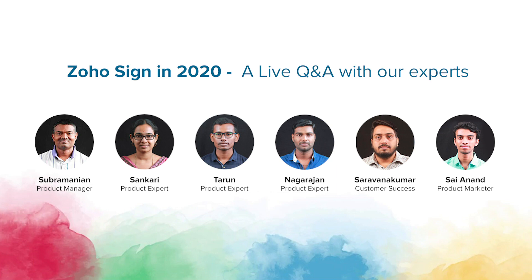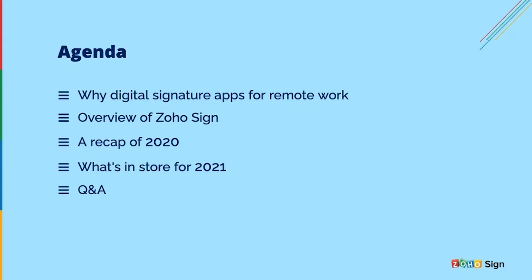If you have any queries, feel free to raise them at any time during the webinar using the questions option on your screen. Some of your questions will be responded to by the panel members as I present for the first 20 minutes or so, but a majority will be responded to orally once we begin the Q&A segment. Let's look at today's agenda: I'll talk about why digital signature applications are the right way forward, especially with remote work being the new normal. I'll give an overview of Zoho Sign, a recap of 2020 additions, features, and integrations, a sneak peek for 2021, and then we'll move to the Q&A session.